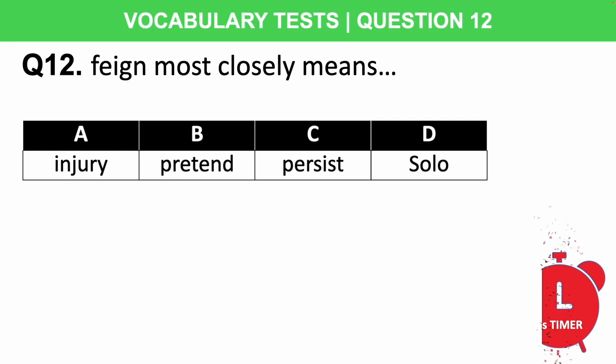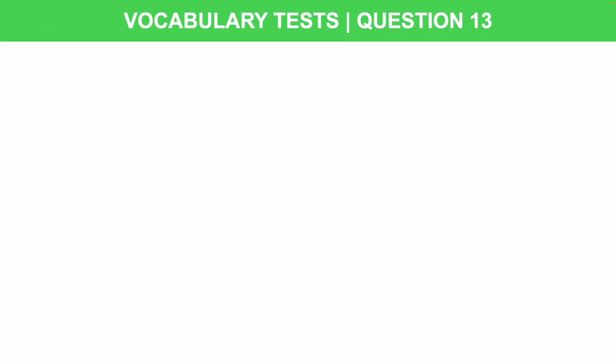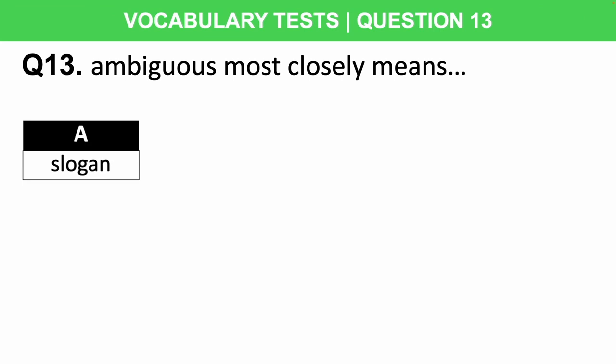Question 13: Ambiguous most closely means A: slogan, B: vague, C: favour, or D: gesture? You have five seconds on the timer starting now.